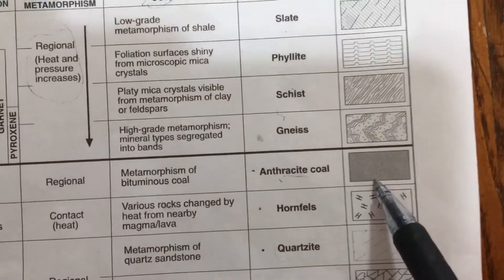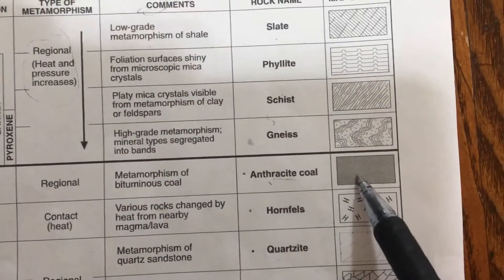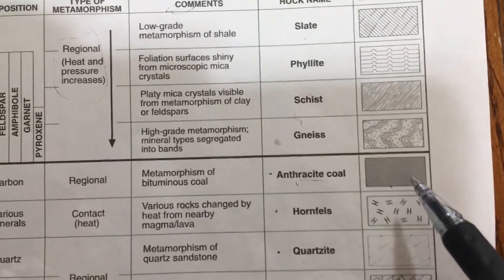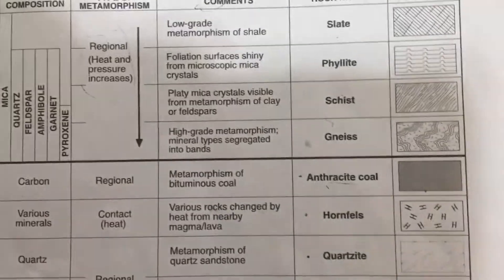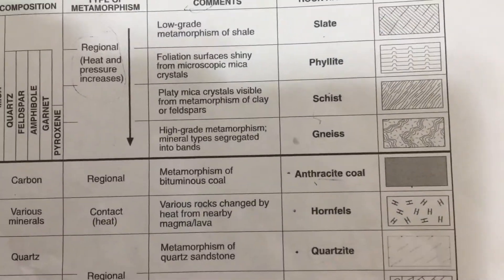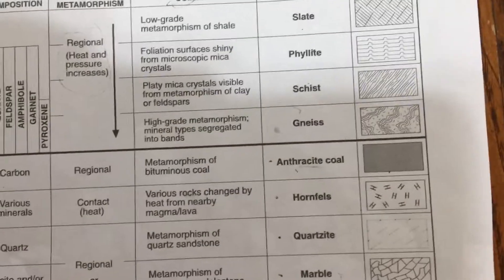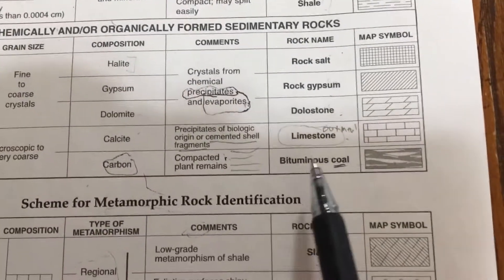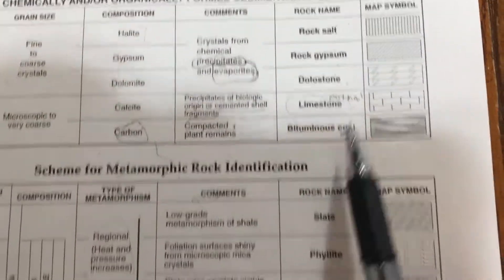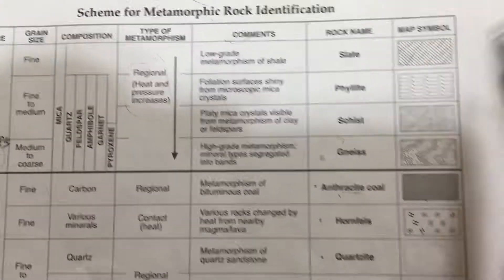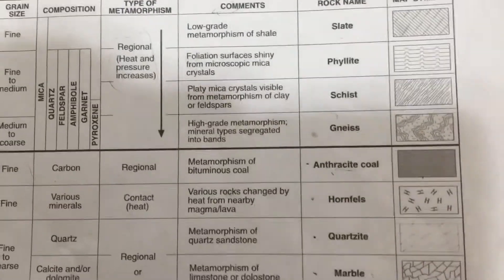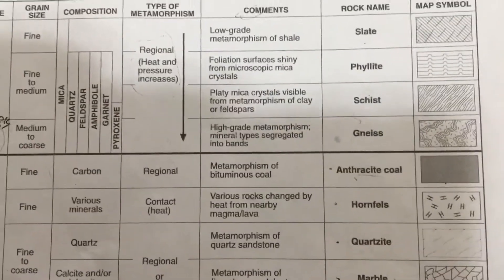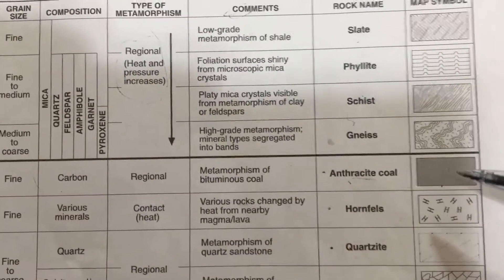A couple of the trickier ones: anthracite coal — similar to the other coal one, I don't really have a good way of saying what this is other than here's what it looks like. It looks very similar on the computer screen to the bituminous coal from sedimentary — this is just that coal put under heat and pressure. Sometimes it's called hard coal.